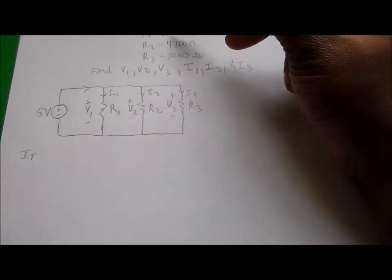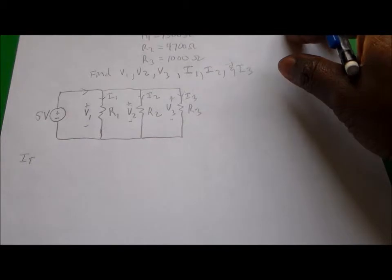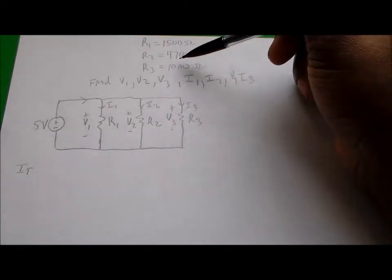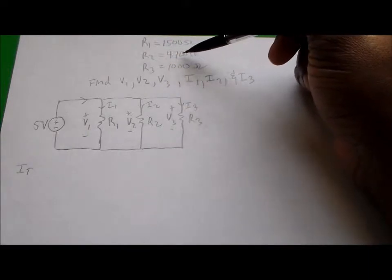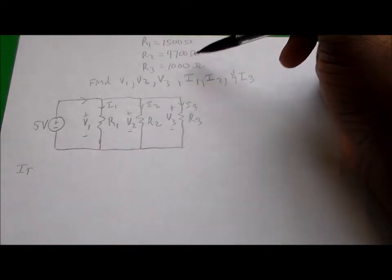Our three resistor values are 1500 for resistor number 1, 4700 for resistor number 2, and 1000 for resistor number 3.